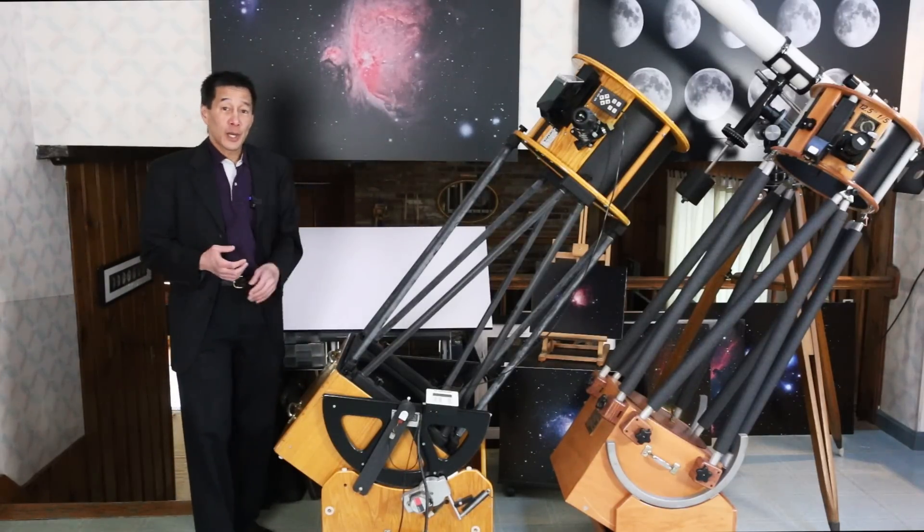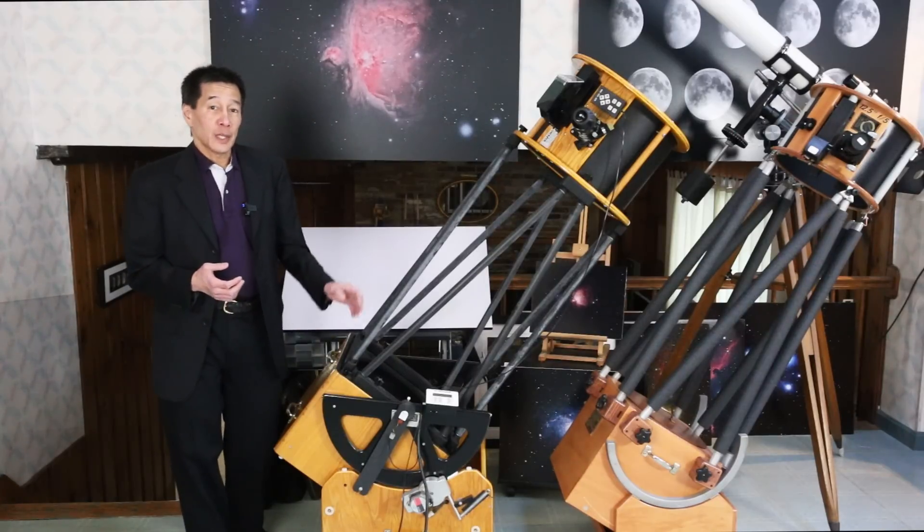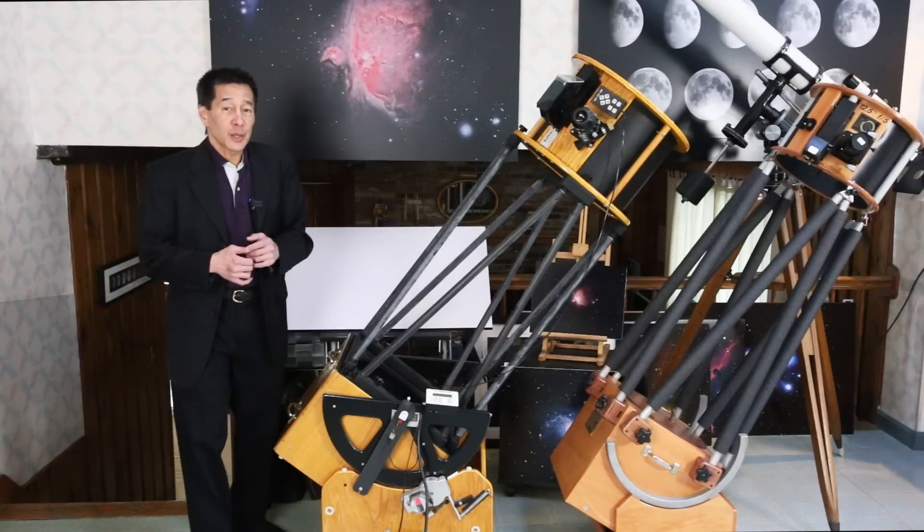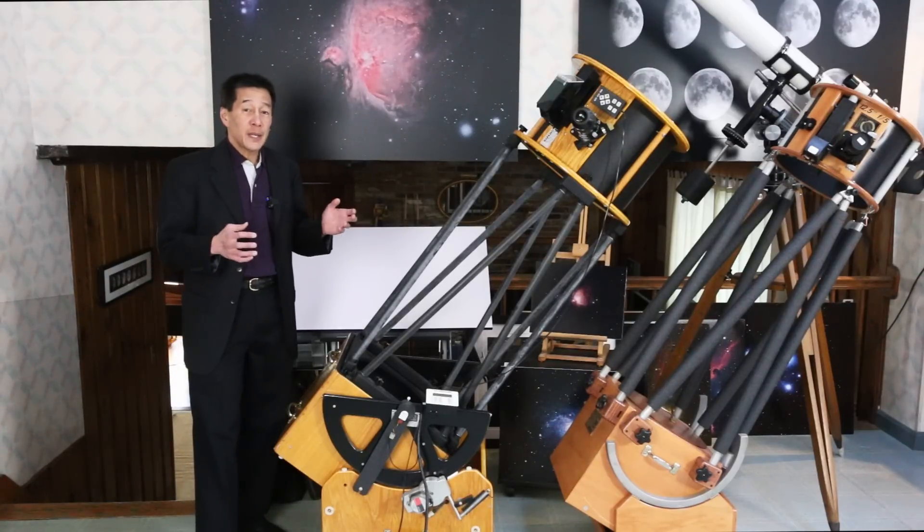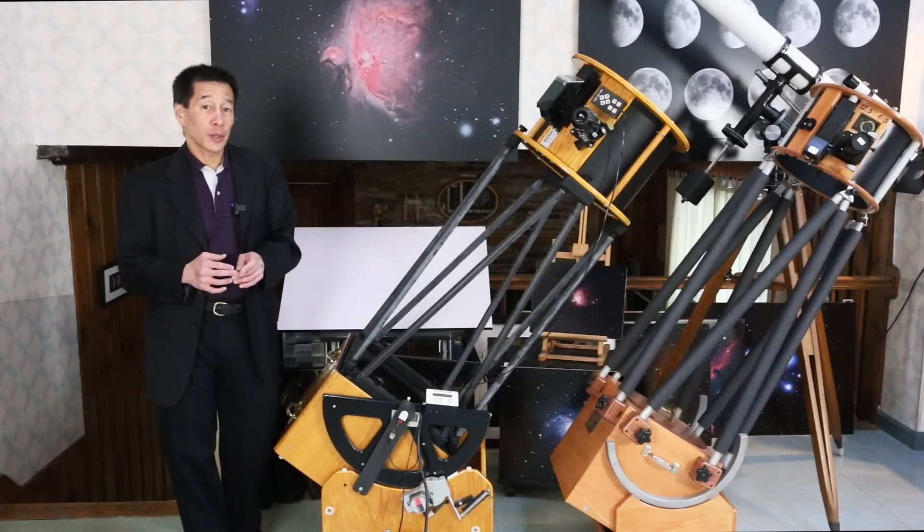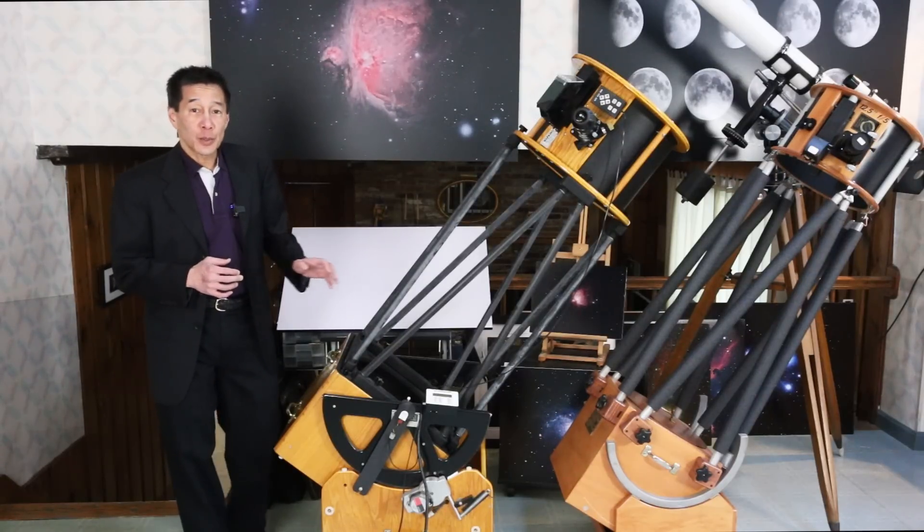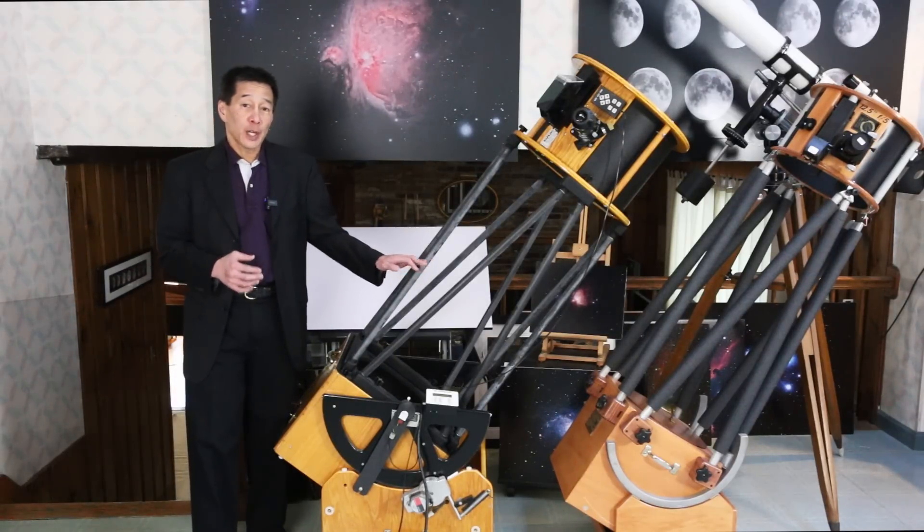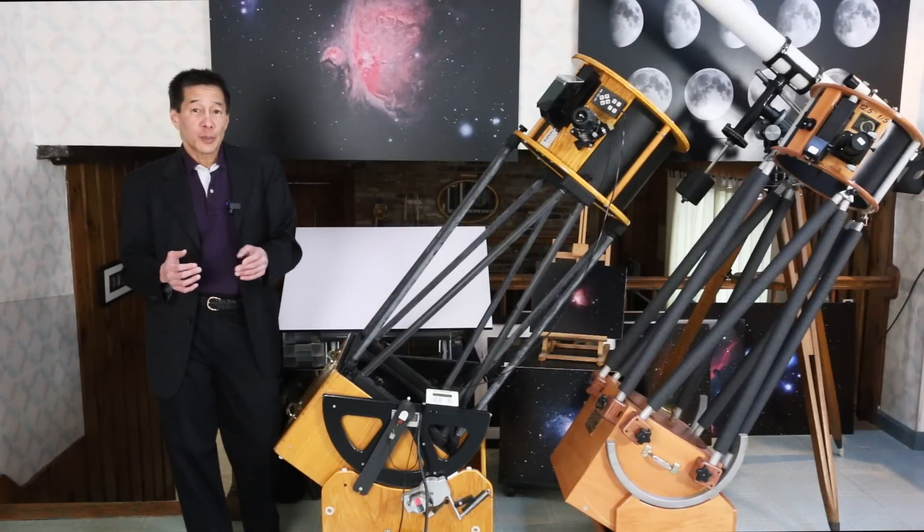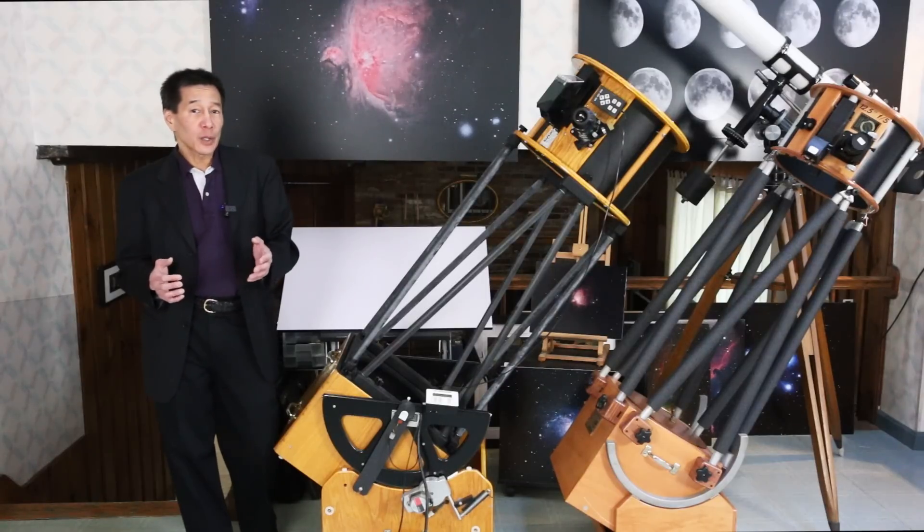There's an upper truss assembly that's round, there's the mirror box assembly, and then there are the truss poles in between. Some minor differences—the Obsession uses eight individual truss poles and they sit on the outside of the rocker box. With the Star Master, there are four of these A-frames and they sit inside the rocker box. As a result, aperture for aperture, the Obsessions tend to be a little smaller and a little lighter than the Star Masters.